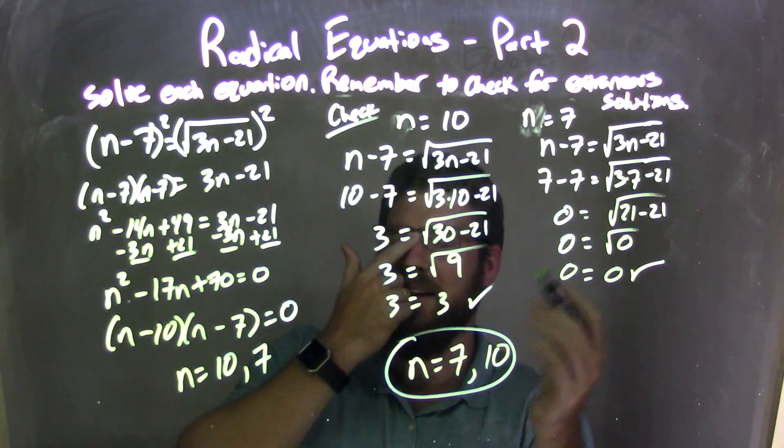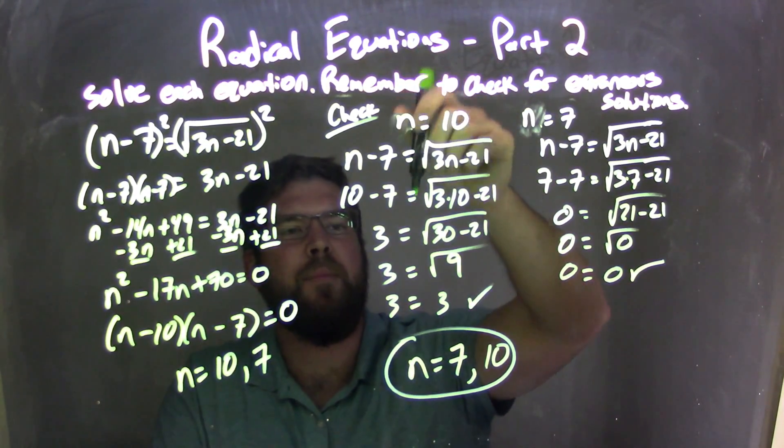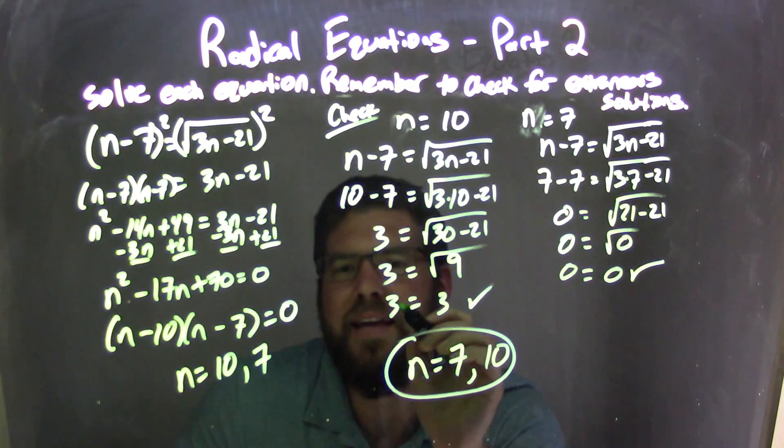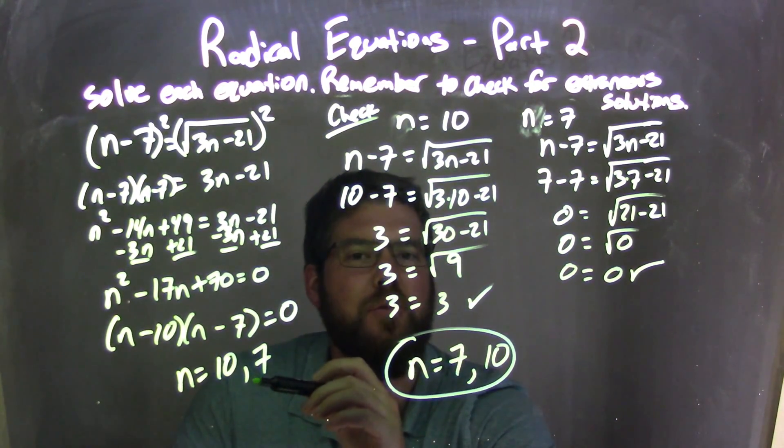I always do that. It's n, not x. We're dealing with n here. Stick with the same variable. n equals 10. Plugged 10 in for n. Brought it back down. Simplified, simplified. And got 3 equals 3. Fantastic. True statement making 10 a real solution, not extraneous.